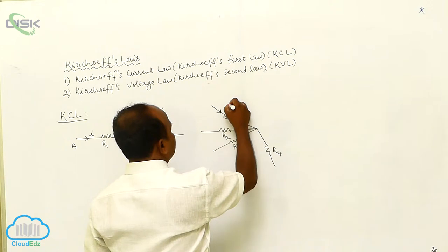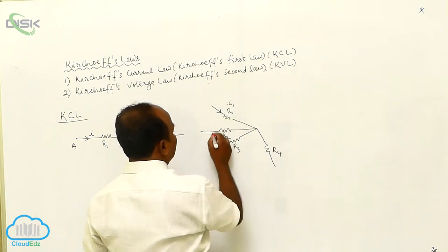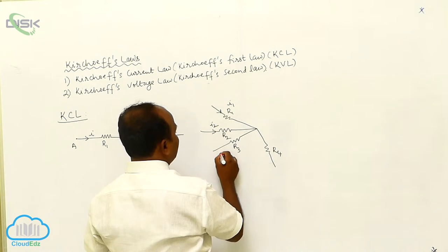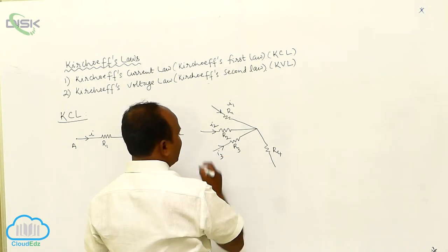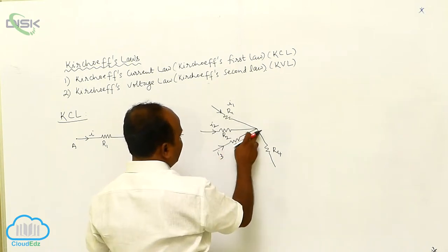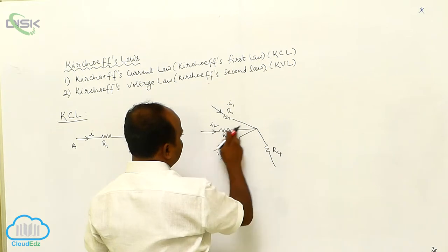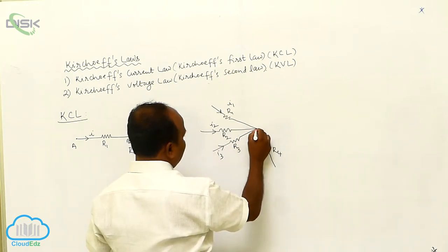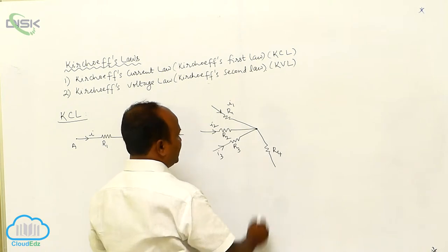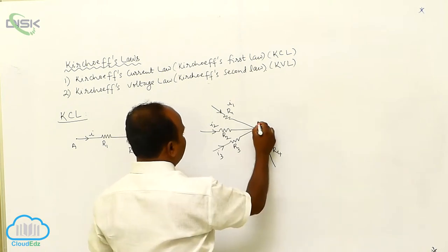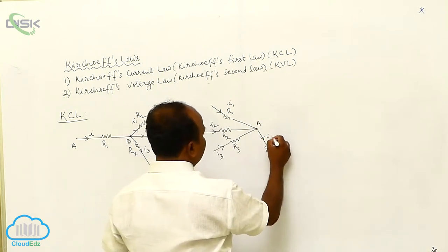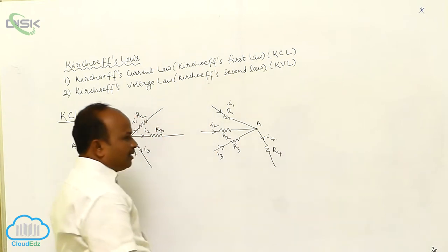I1 is the current through the resistance R1, I2 is coming through the resistance R2, I3 is coming through the resistance R3. I1 is coming here, I2 is coming here, I3 is coming here — all the currents are going to meet at point A, then the total current is said to be I4.